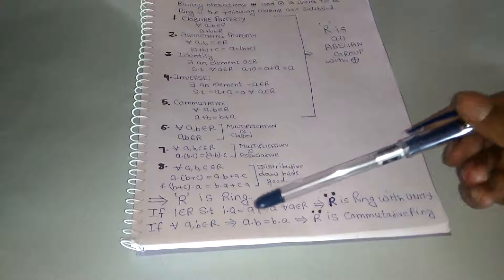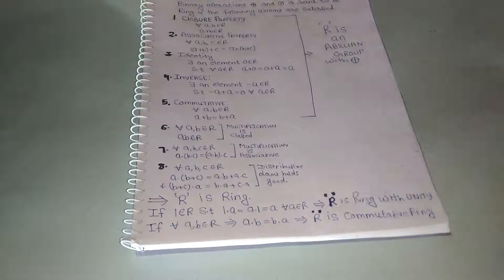Moreover, if for all A, B belongs to R we have A dot B is equal to B dot A, this implies R is a commutative ring.